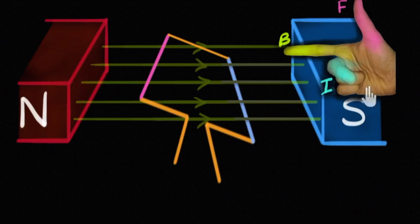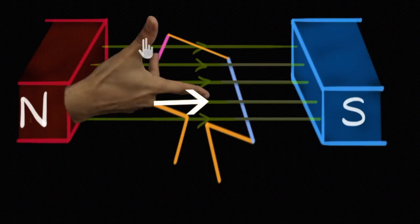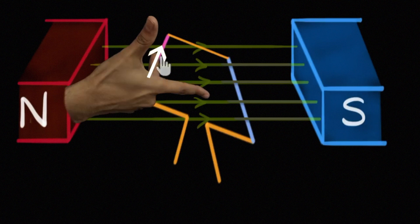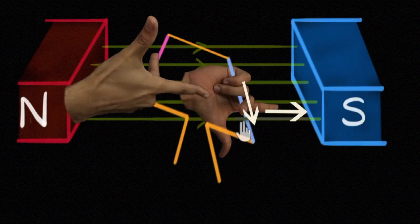Let's find out the direction of current on the left side of the armature coil — why don't you try it yourself first? We position our right hand so that the forefinger is aligned to the direction of the magnetic field, and the thumb shows the direction of motion of the conductor upward. Then the second finger indicates the direction of the induced current — current flows inward. Similarly, for the right hand side, the forefinger is aligned to the direction of the magnetic field, and the thumb shows the direction of motion of the conductor downward. Then the second finger indicates the direction of the induced current — current flows outward.